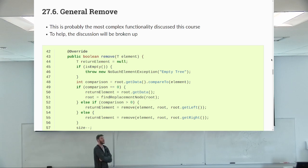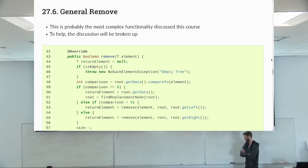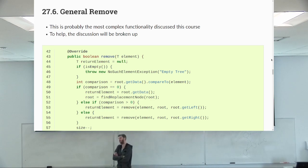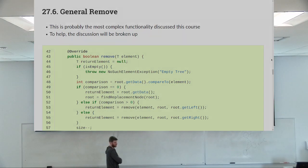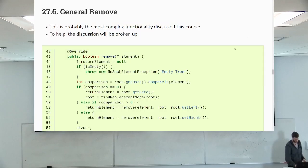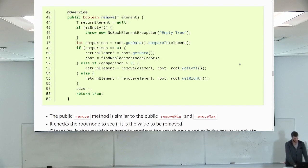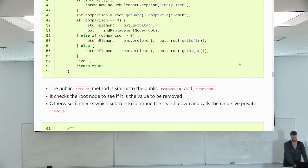Moving on to the general remove, things are going to get hairy. We could be removing a leaf node, or an internal node. What happens if the node has two children? There are a few funny cases. So there's a public remove and a private remove — it's doing the recursive thing again. The public one always operates on the root.